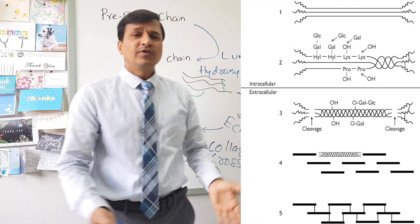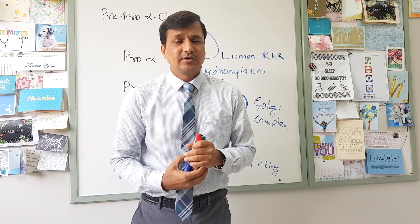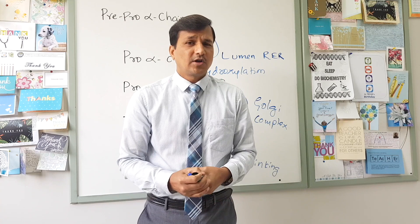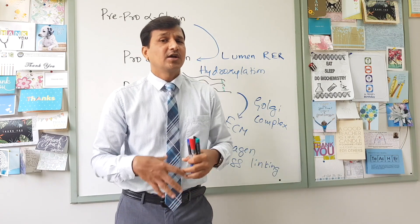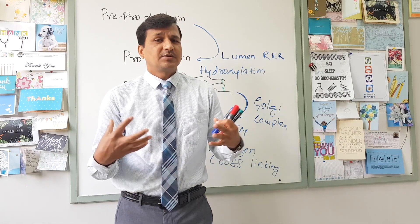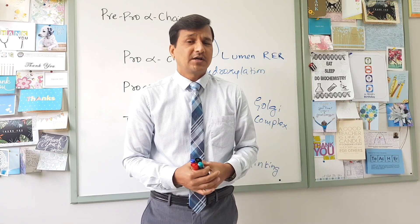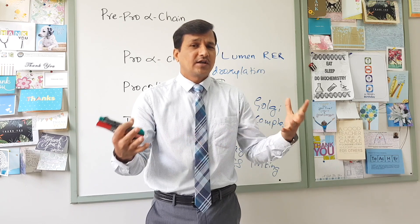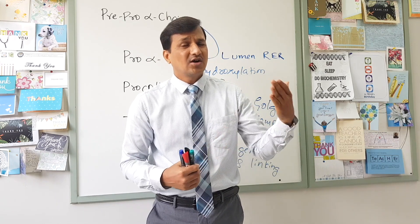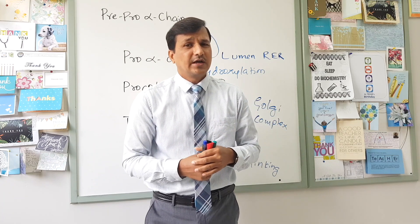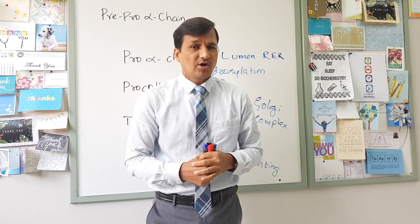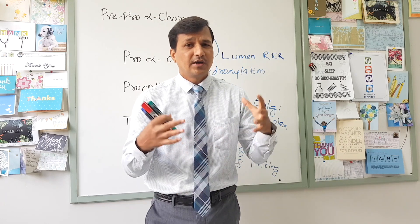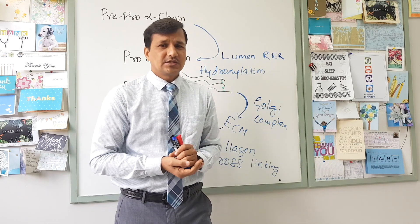This is how collagen is synthesized and presented in the extracellular matrix of different tissues. More than 25 types of collagens are present, each with function depending on their arrangement. In the basement membrane of the kidney, type 4 collagen forms a mesh-like network; in the cornea, type 1 collagen has a systematic arrangement that gives transparency; and in bone, collagen molecules have an angulated arrangement that provides mechanical strength.